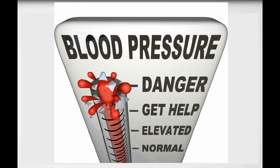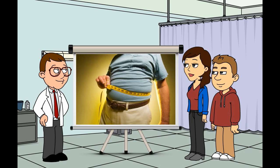The American Heart Association defines hypertension for adults as 140 mm of mercury or higher systolic and 90 mm of mercury or higher diastolic. These numbers should be used as a guide only.